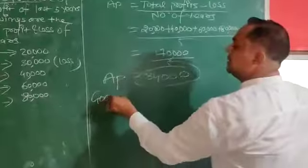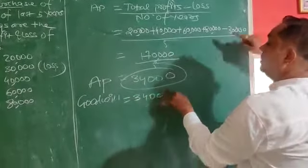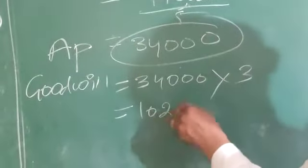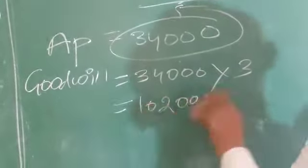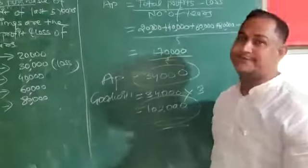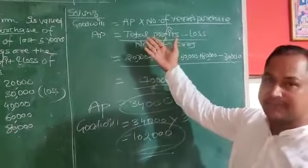goodwill calculation is easy. 34,000 multiplied by number of year purchase 3 comes to 1,02,000, and here is the amount of goodwill. I hope you understood.